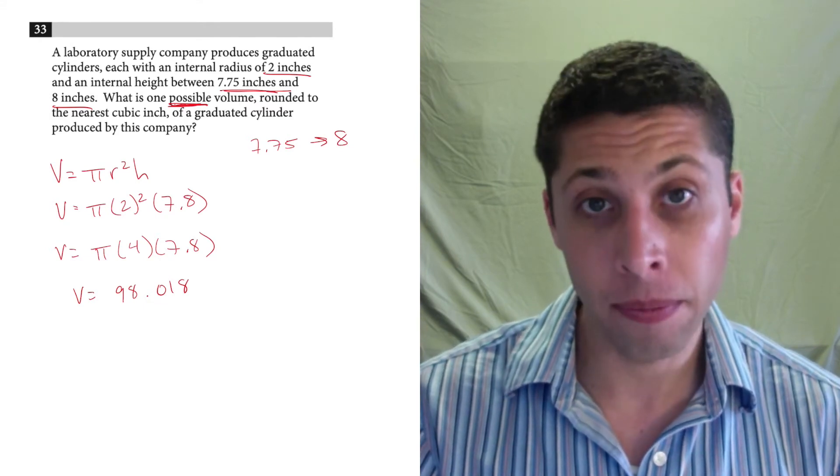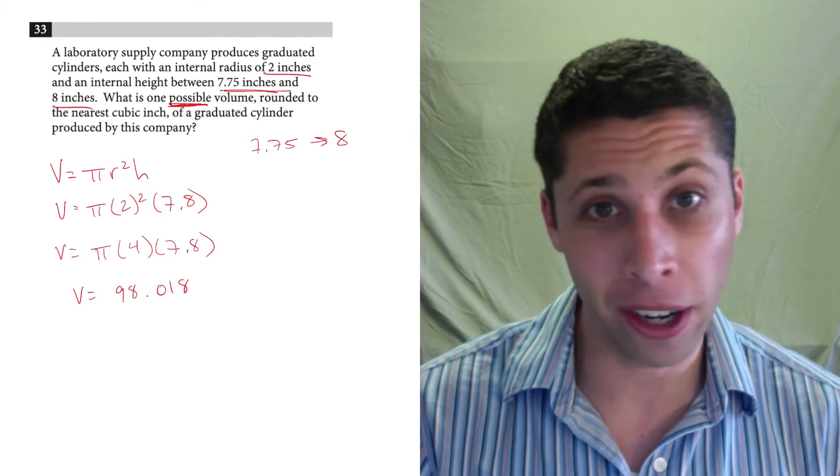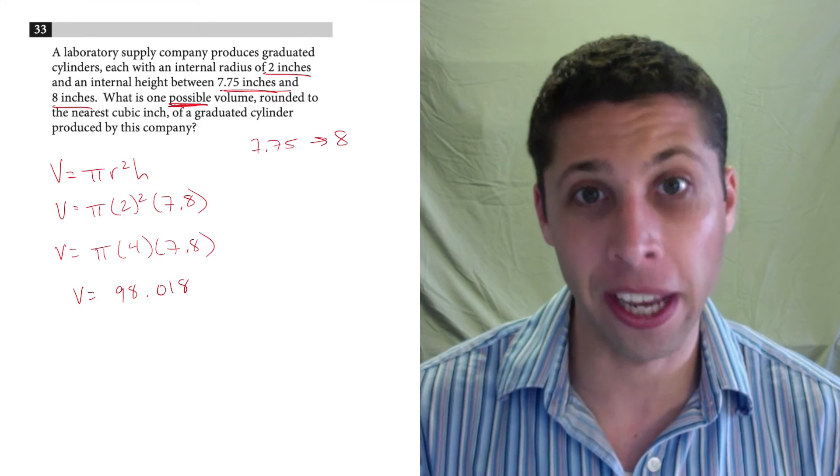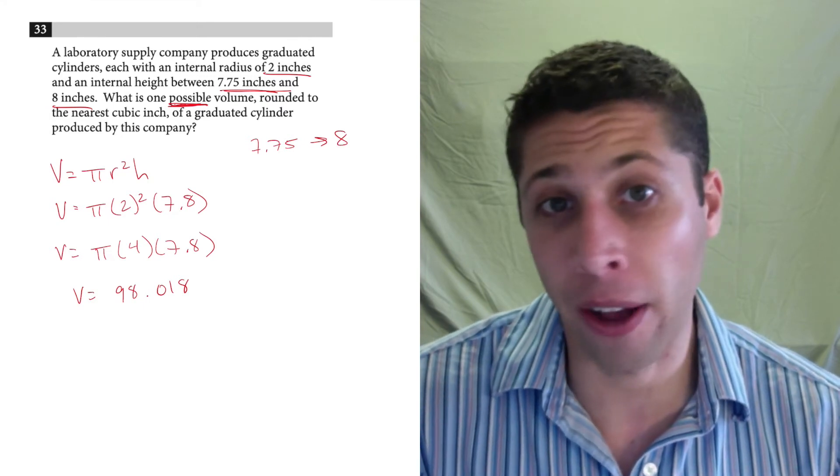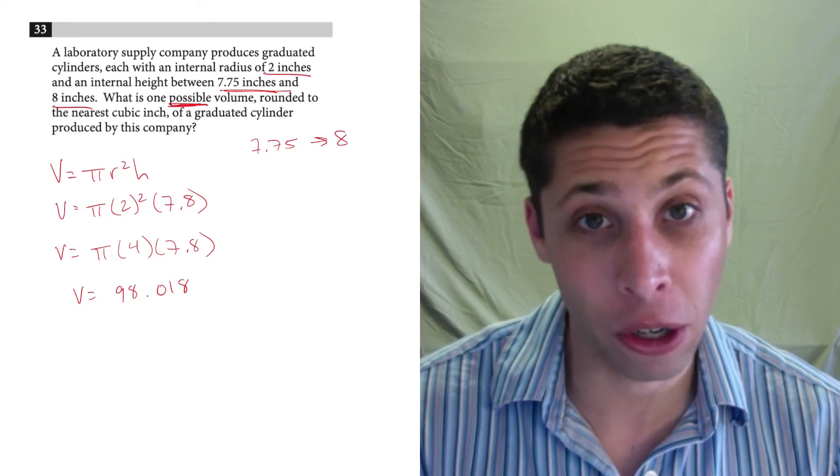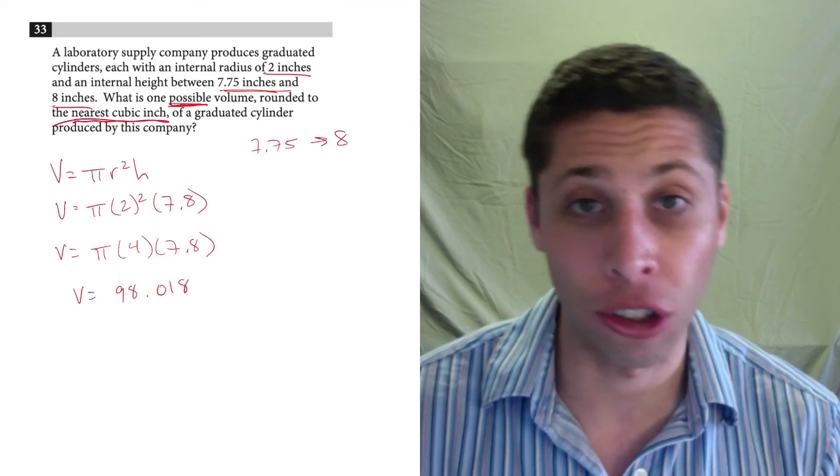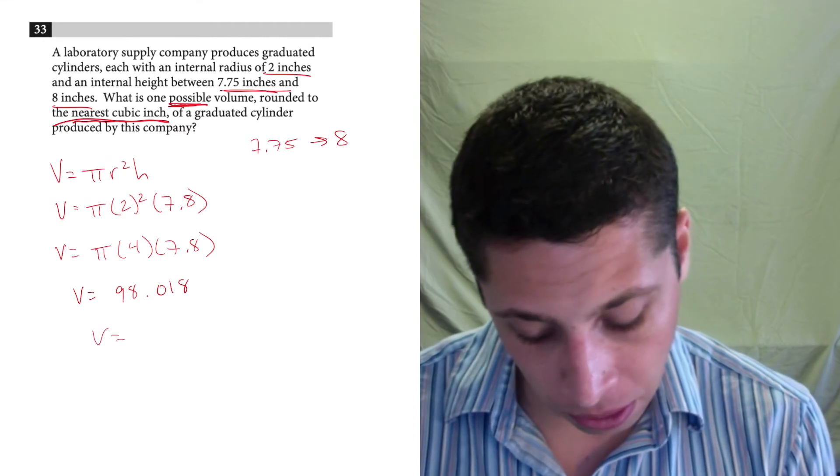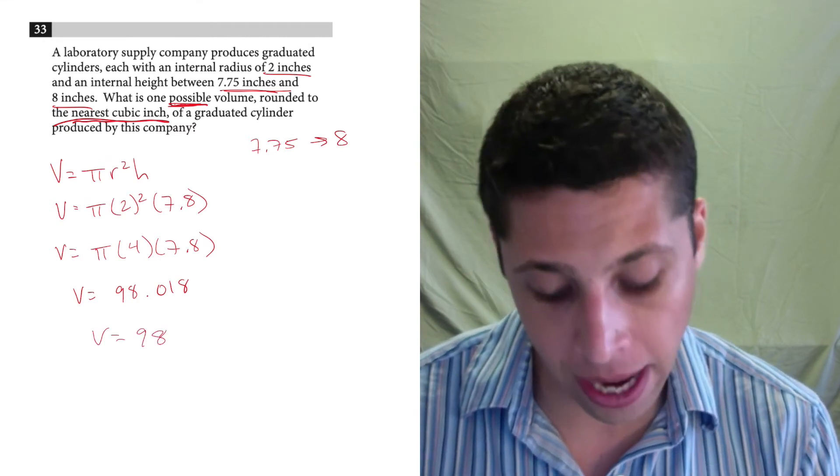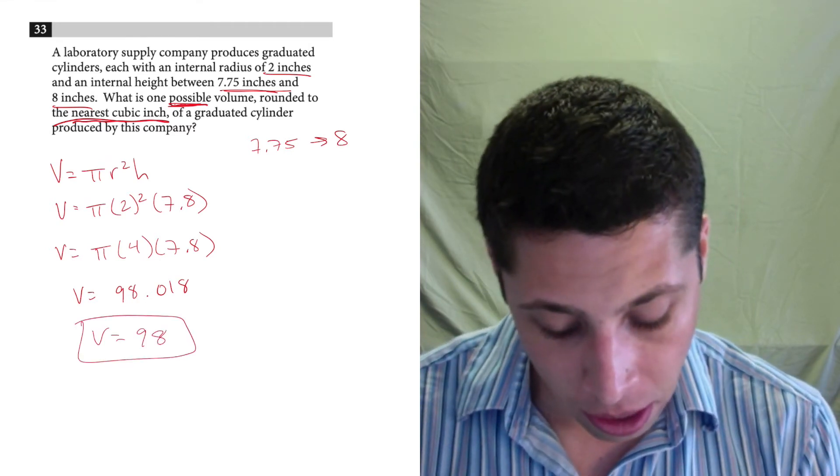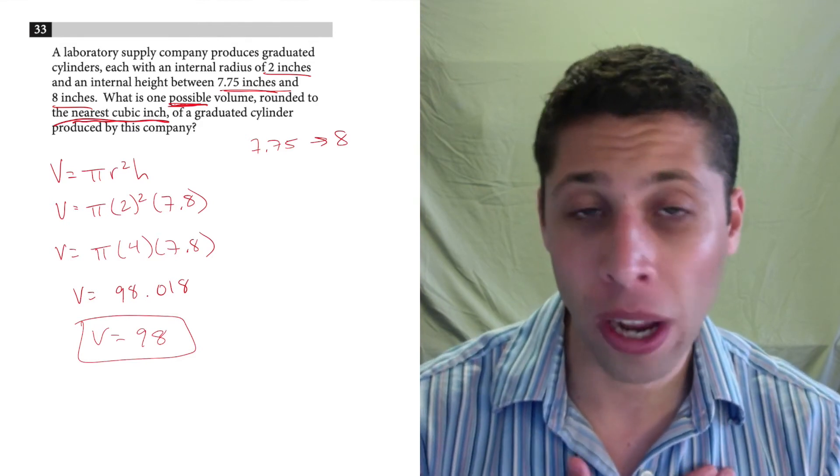So remember, there are always instructions about what to do with decimals. If you're going to have to round, they're going to tell you where to round to. So make sure you round correctly. In this case, they want the nearest cubic inch. So I drop the decimals in this case and I'm rounding down to 98. So that is my answer to this question.